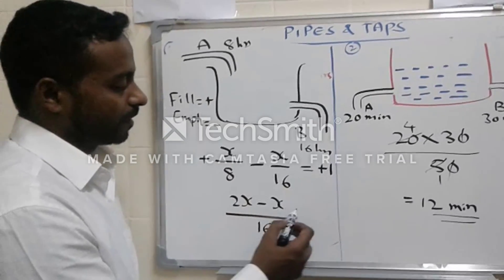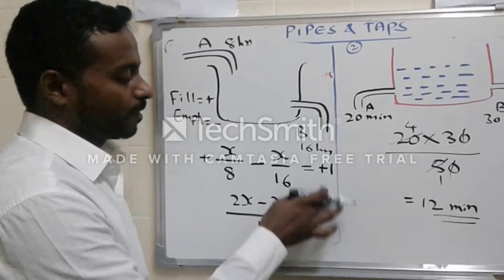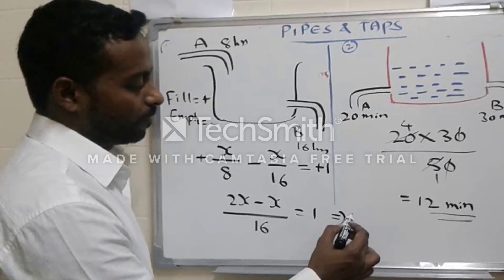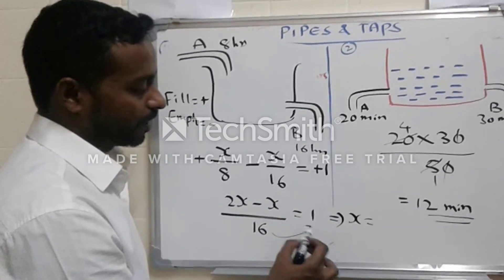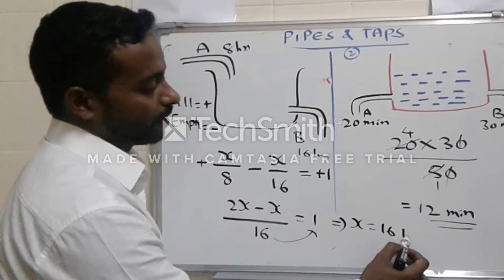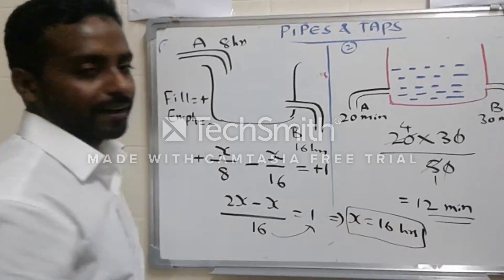It is 2 times of X and X equals to positive 1. Now to get the value, X equals to 16 times 1, 16 hours it will take to fill the tank.